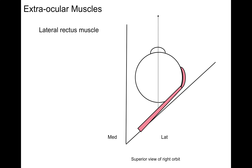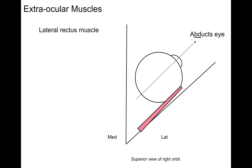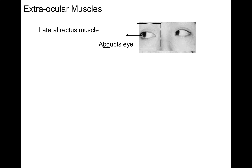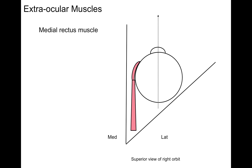Let's go to the lateral rectus first. This is a superior view of the right orbit. Medial and lateral have been indicated. The dotted line represents the axis of gaze of the eyeball. When this lateral muscle contracts, it will abduct the eye in that horizontal plane, as in looking laterally. It abducts the eye.